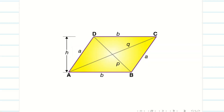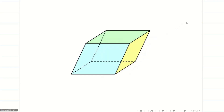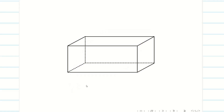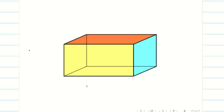In our school days, we remember the parallelogram. When we make the three-dimensional structure of a parallelogram, we get the parallelepiped. So, a parallelepiped is the three-dimensional structure of a parallelogram. And a rectangular parallelepiped is the three-dimensional structure of a rectangle — it is simply a rectangular box.